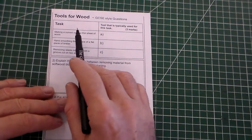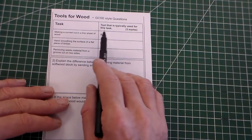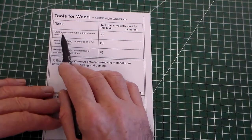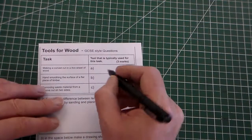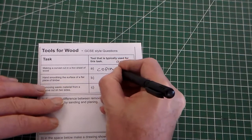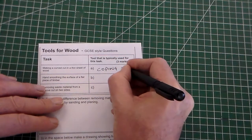So first one, it has task and tool that is typically used for this task. Task one is making a curved cut in a thin sheet of wood. And of course that is a coping saw.